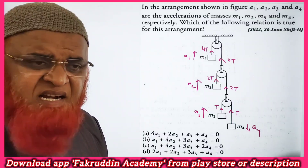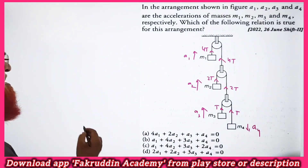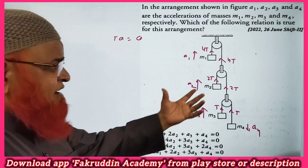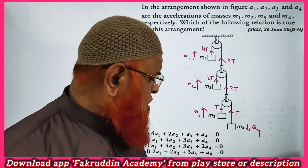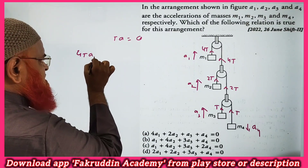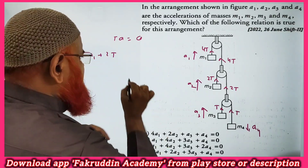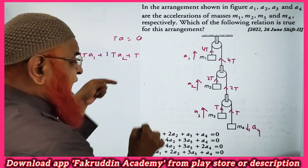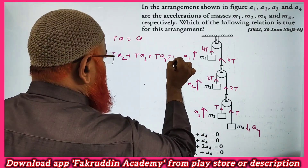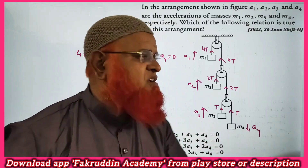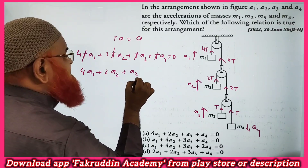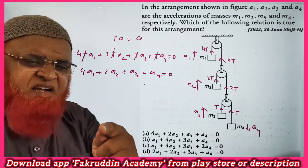Now you know the tensions and the accelerations. The identity which must hold is that the sum of the products of tension and acceleration is equal to zero. The first block of mass m1 has tension 4T and acceleration a1; the second block has tension 2T and acceleration a2; the third block has tension T and acceleration a3; the fourth block has tension T and acceleration a4. Combining these and removing the common tension factor gives: 4a1 + 2a2 + a3 + a4 = 0. Find the correct option — this is going to be your correct option.